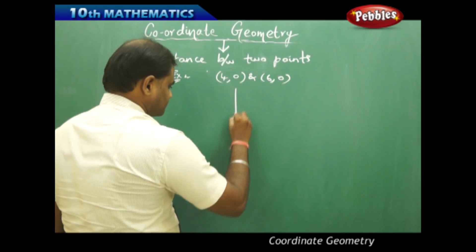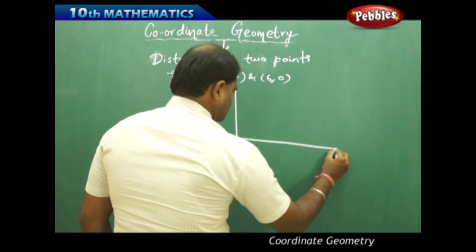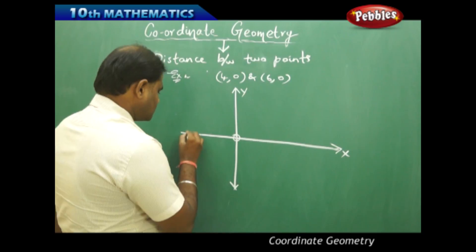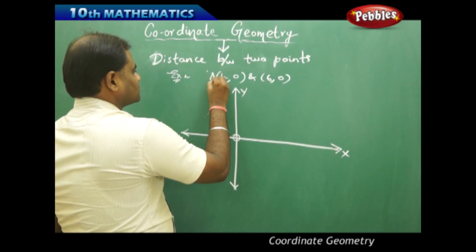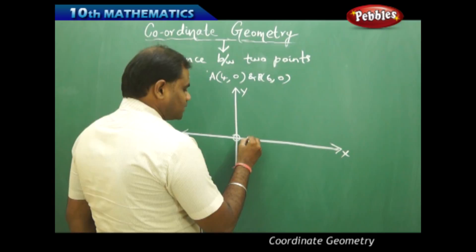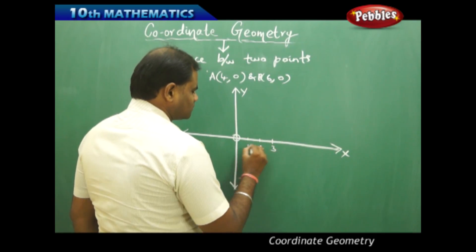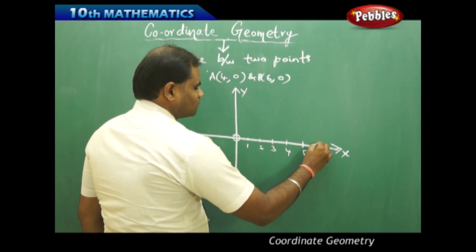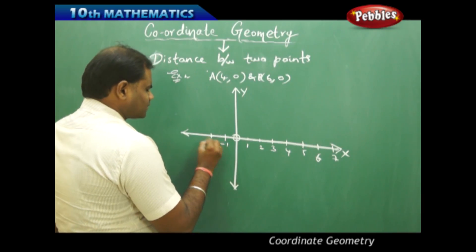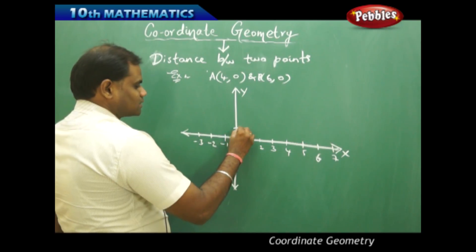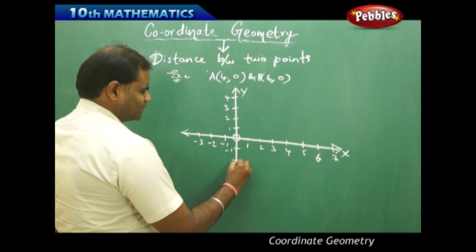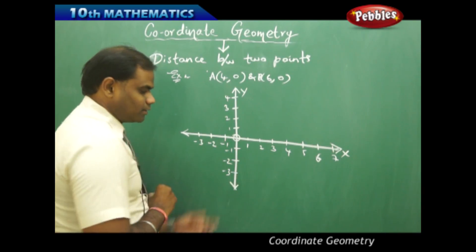I take the x-axis, y-axis, and the origin, and then plot points A and B respectively. Since A is (4, 0), I mark coordinates 1, 2, 3, 4, 5, 6, 7, 8 on the right and minus 1, minus 2, minus 3, minus 4 on the left. Similarly, 1, 2, 3, 4 upward and minus 1, minus 2, minus 3, minus 4 downward on the y-axis.